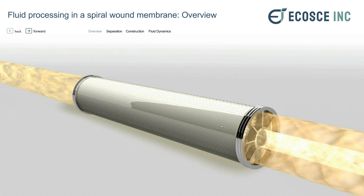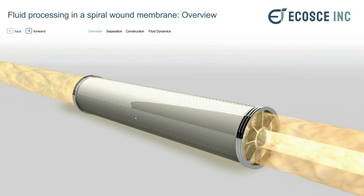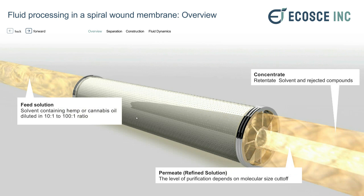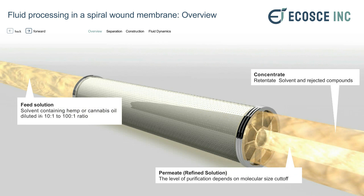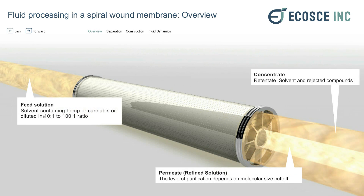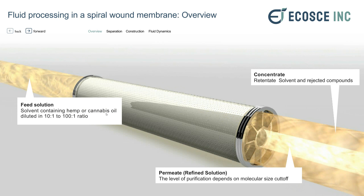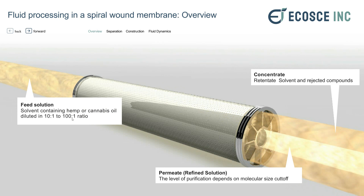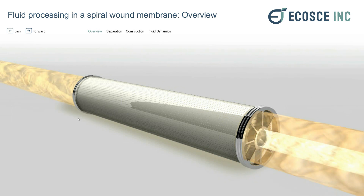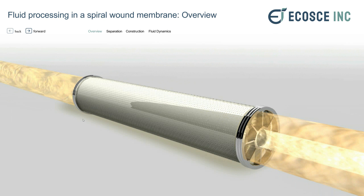A chemical separation is enabled by a spiral wound membrane. A feed solution is fed into the membrane — that's a hemp or cannabis oil that is diluted 10-to-1 to 100-to-1 ratio between solvent and oil.